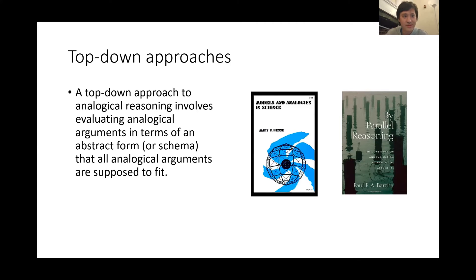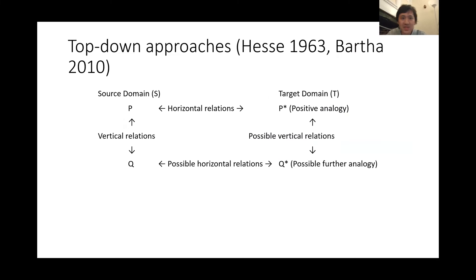A top-down approach is one which involves evaluating analogical arguments or reasoning in terms of an abstract form or schema that all analogical reasoning and arguments are supposed to fit. Here is a quite typical schema shared by Hesse and Bartha. We have a source domain S and target domain T, and we have P, P-star, Q, and Q-star, as well as horizontal relations and vertical relations.